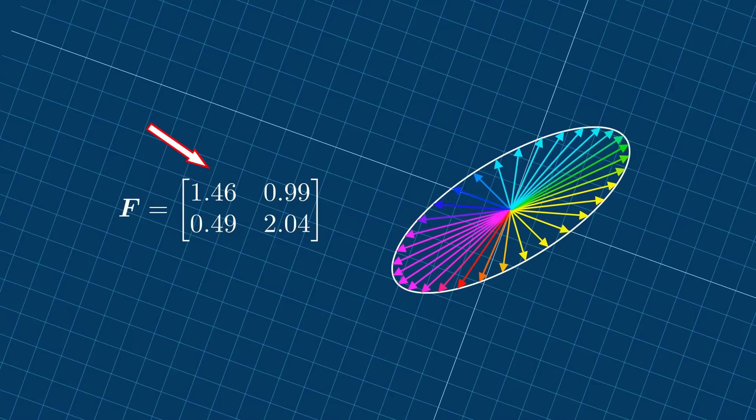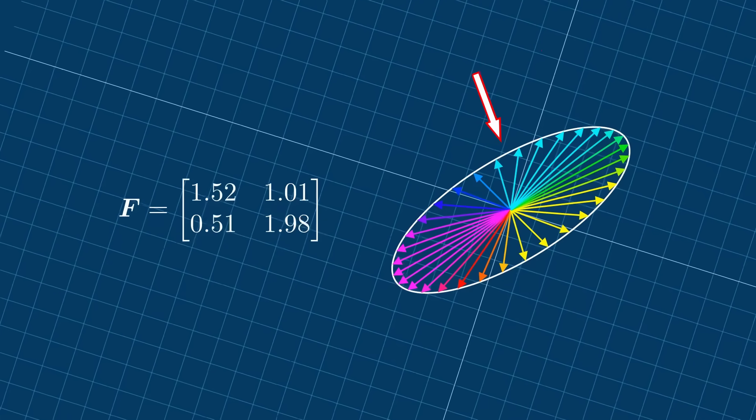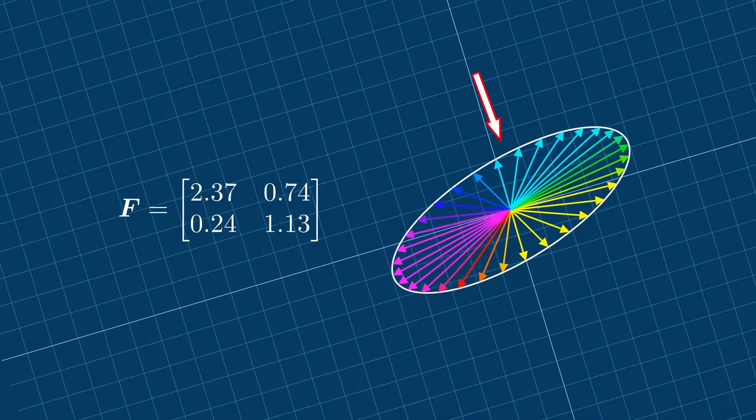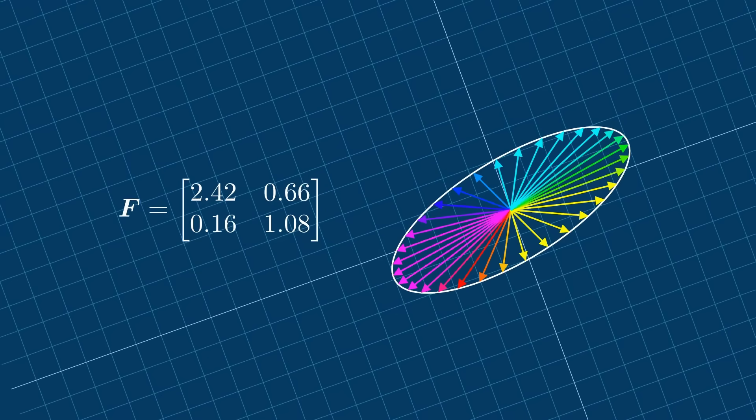So, the next time you see a tensor represented by a matrix, try not to think of the matrix itself as the tensor. Instead, recall that this matrix is just one way to express the tensor in a particular coordinate system. The tensor itself is a more abstract mathematical object that describes the deformation of the circle independent of the coordinate system. Of course, in many engineering applications, we work with a fixed Cartesian coordinate system. In this case, there is just one unique matrix that describes the tensor. And usually we don't have to worry too much about the difference between matrices and tensors.